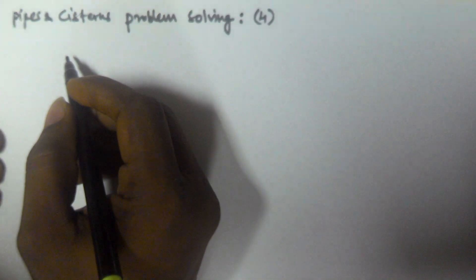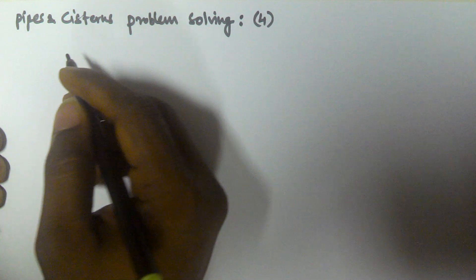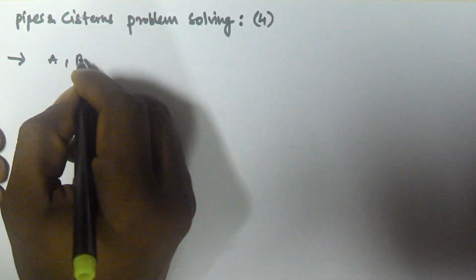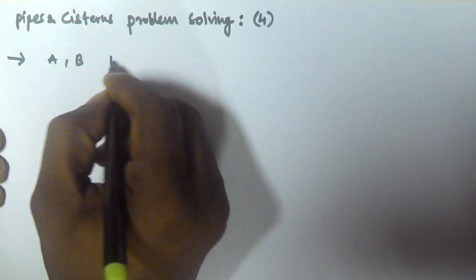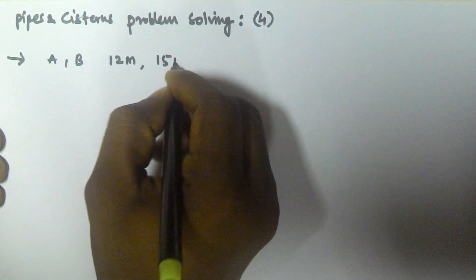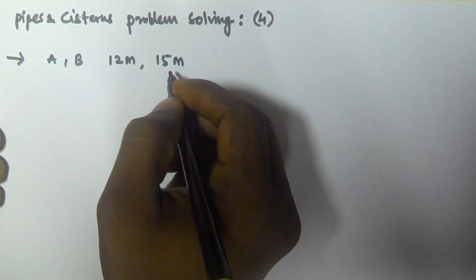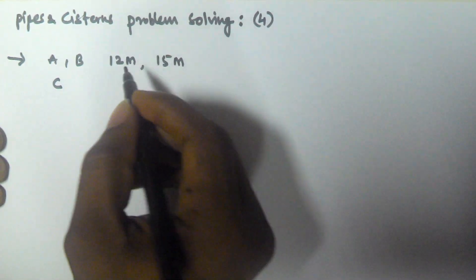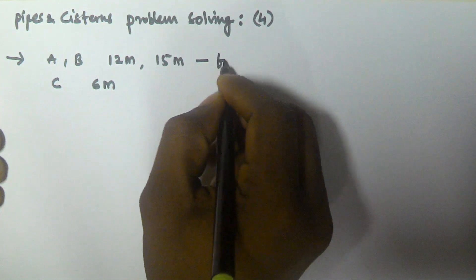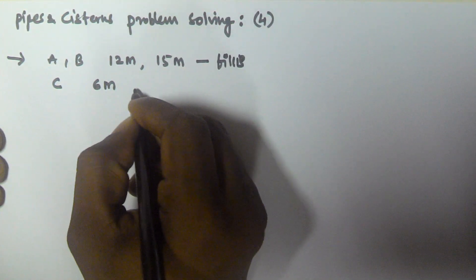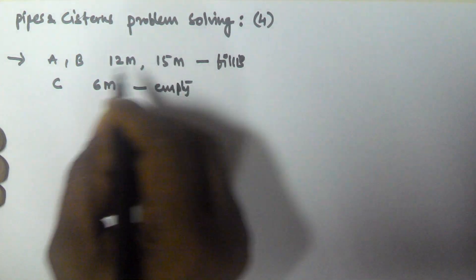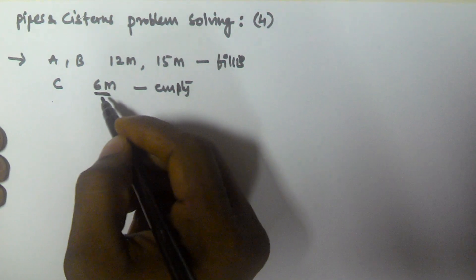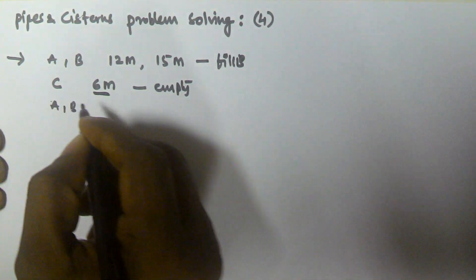Hello friends, in this video we will see more problems related to pipes and cisterns. Consider the problem: two pipes A and B can fill the tank in 12 minutes and 15 minutes respectively, while the third pipe C can empty the full tank in 6 minutes. So A and B are filling pipes and C is an emptying pipe — A takes 12 minutes to fill, B takes 15 minutes, and C takes 6 minutes to empty.